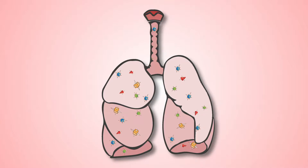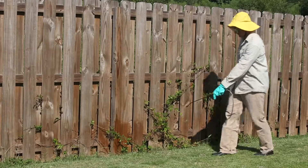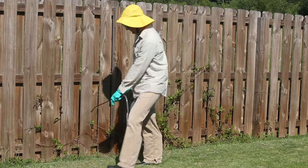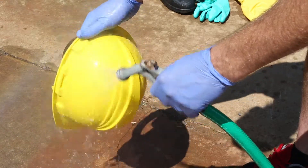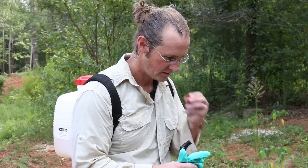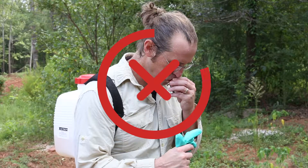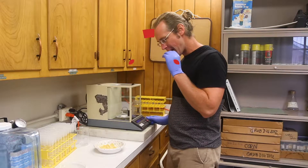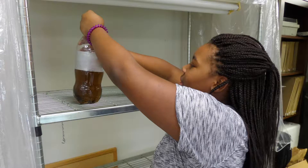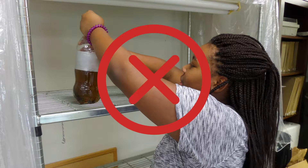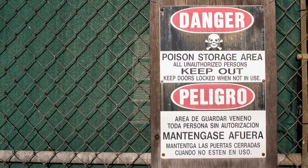Inhalation can cause damage to the nose, throat, and lung tissue, and allow chemicals to enter the bloodstream, potentially damaging other organs. Oral exposures can occur during mixing, loading, applying, or while cleaning equipment. Never use your mouth to clear a nozzle. Never eat, drink, or smoke without washing your hands. Never transfer chemicals to unmarked containers or store them in common areas. All pesticide measuring cups and containers should be properly marked and stored separately from food or beverages.